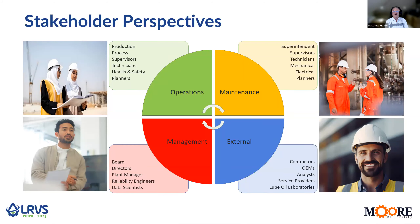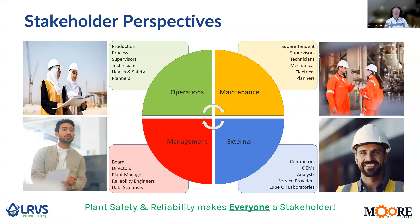One thing that everybody who gets involved tends to work out is there's a juxtaposition between operations and maintenance. Maintenance or the condition monitoring program will want equipment switched over in order to monitor it. However, operations are going to be apprehensive about switching anything over, which will cause a process upset. So there's always going to be teamwork involved, but there's always going to be a slight conflict of interest. However, everyone should remember that everybody is a stakeholder in plant safety and reliability. Everybody has a role to play.